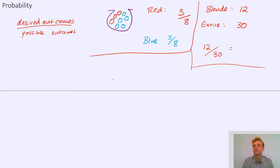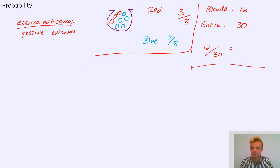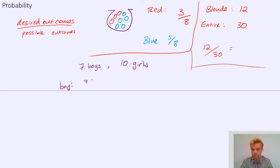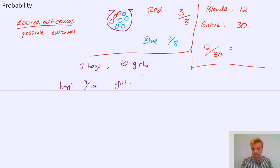What else could it be? It could be anything — it could be boys and girls in a group. Perhaps there are seven boys and 10 girls, and I would like to know the probability that I pick a boy. Well, there are seven boys out of 17 possible people. And the probability that I pick a girl is going to be 10 girls out of 17 people.